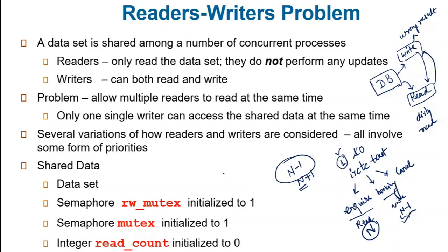This is the Reader-Writer problem: while reads are being performed, we wait for read operations to complete before starting writes, and when writes are performed, we wait for completion before starting reads or another write. Simultaneous read-write operations are not allowed. Writing of an item in a file or database is mutually exclusive. This is the synchronization problem wherein we must restrict the number of concurrent reads and writes.